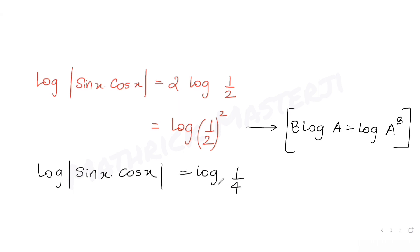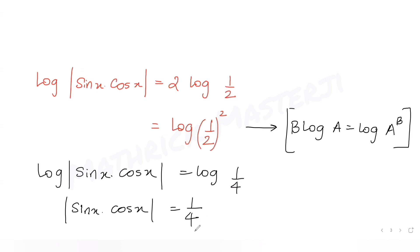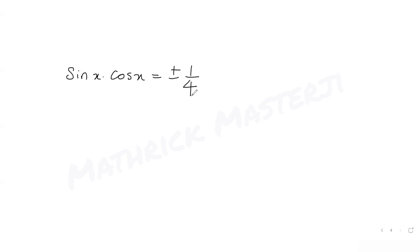Since log a = log b implies a = b, we remove the log from both sides and get |sin x · cos x| = 1/4. Removing the absolute value, the right-hand side becomes plus or minus 1/4, so sin x · cos x = ±1/4.